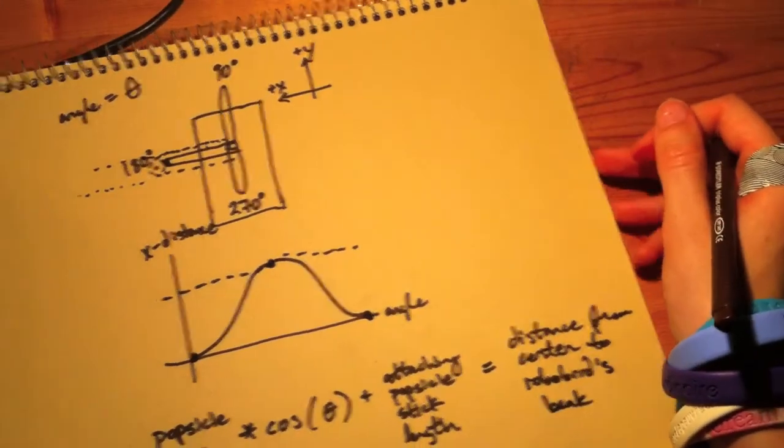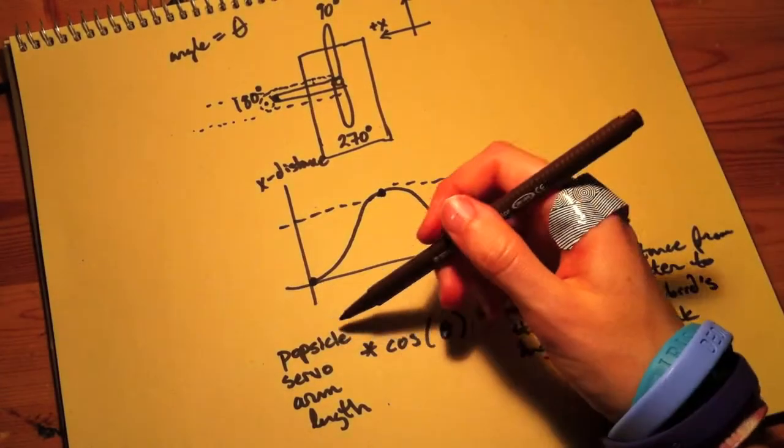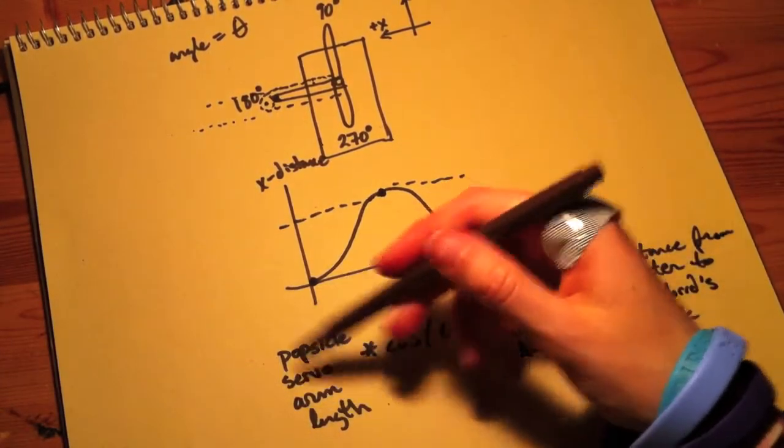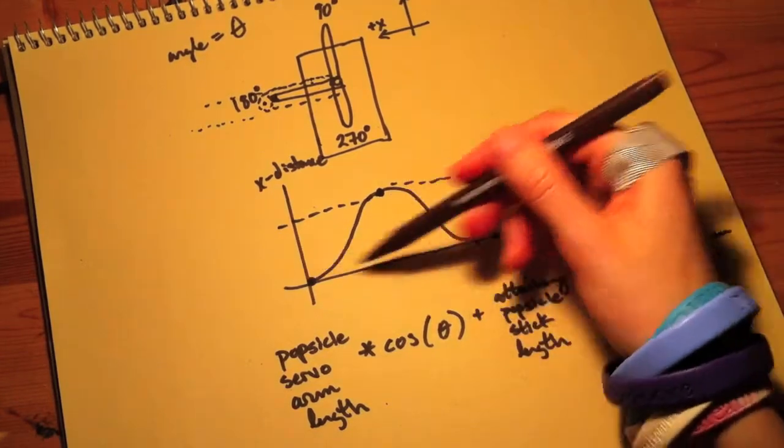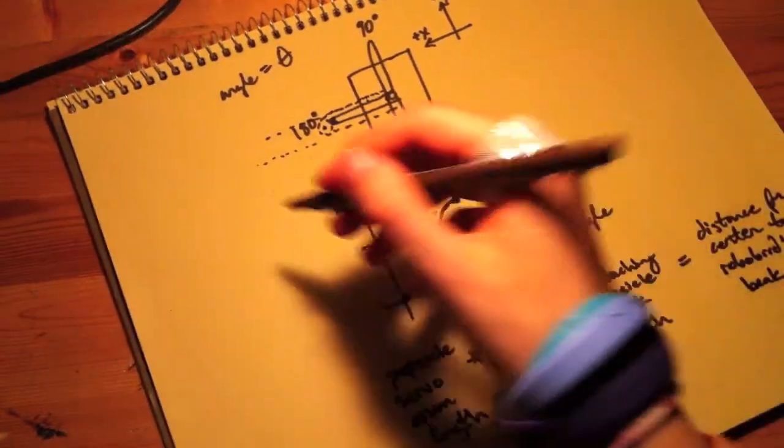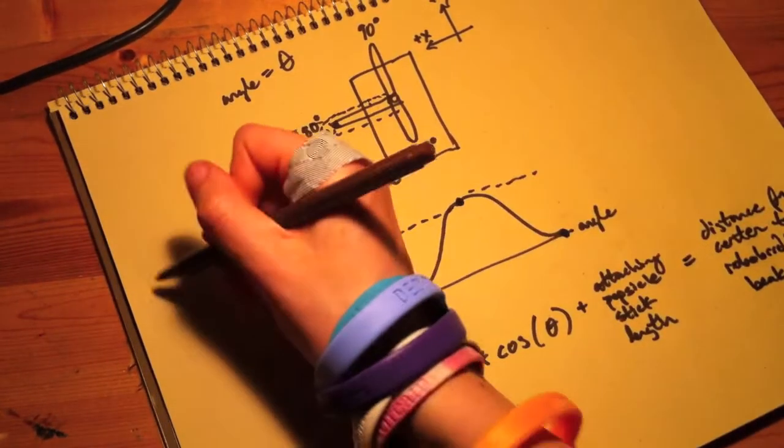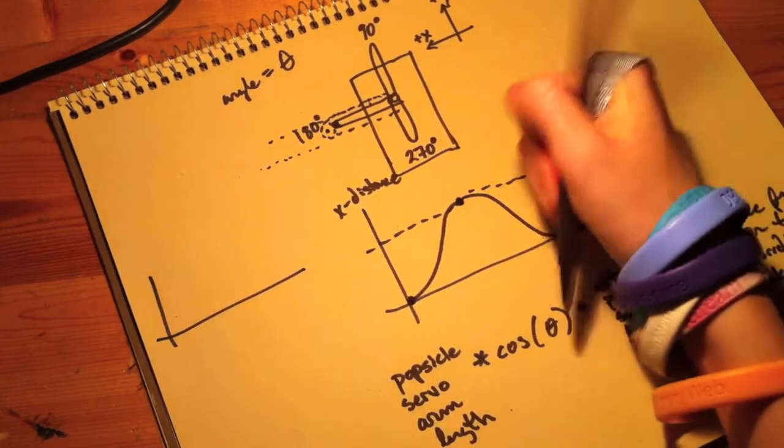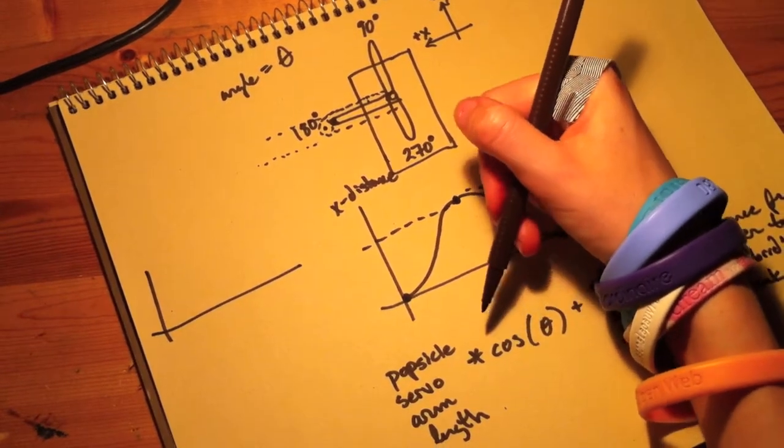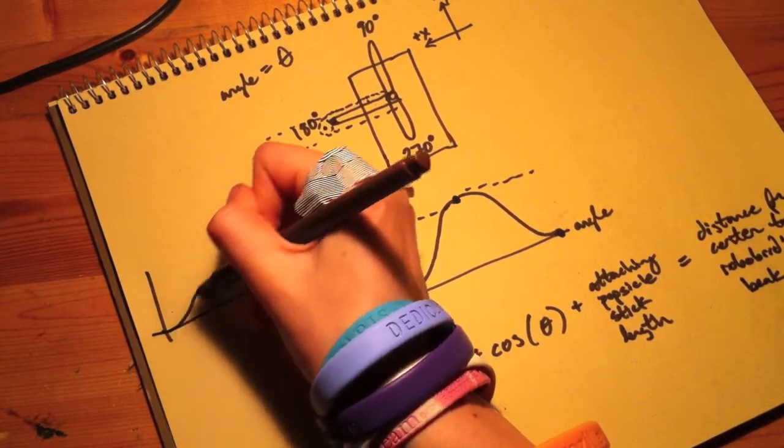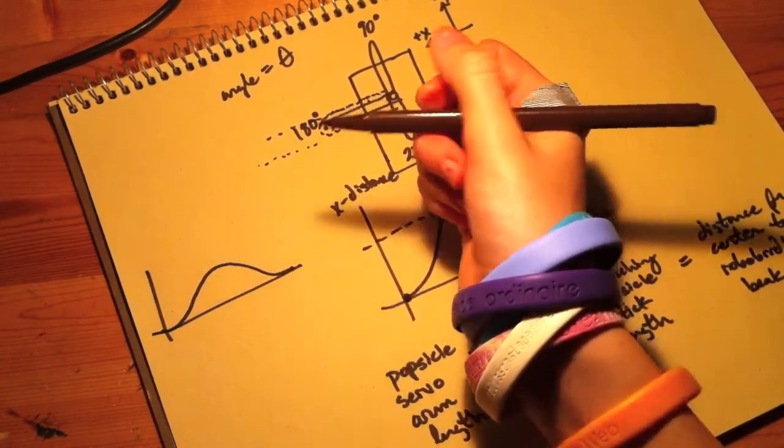So you might be wondering what each of these values does to this function. So the popsicle servo arm length, when that's being multiplied by the cosine of theta, all that's doing is changing the amplitude of the function.